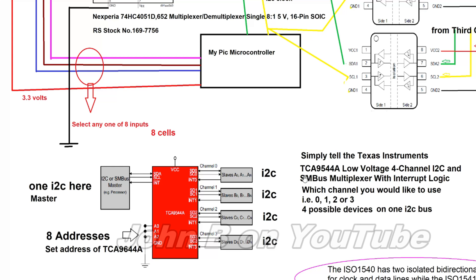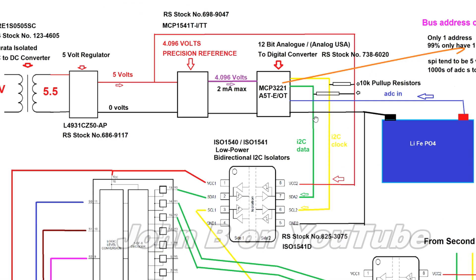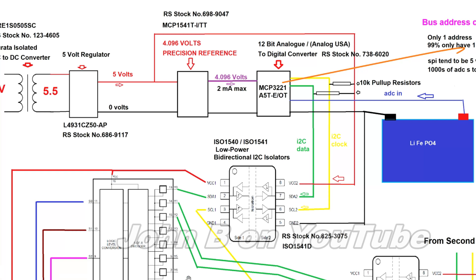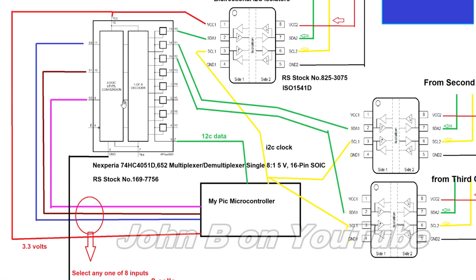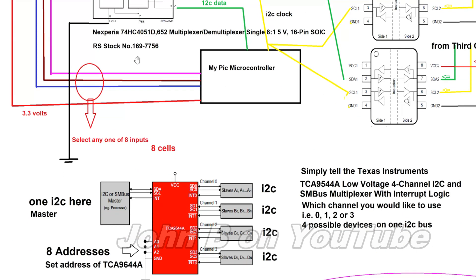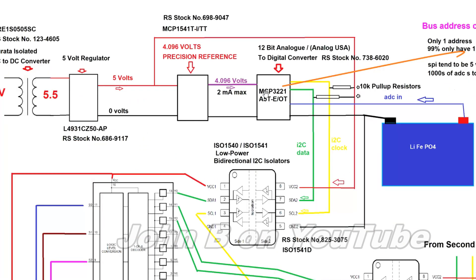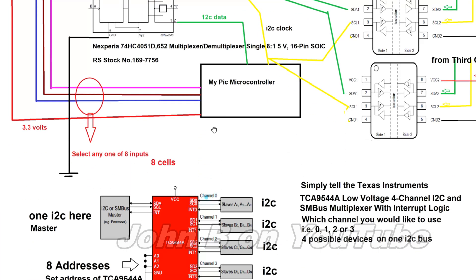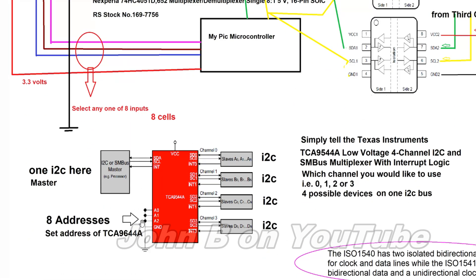It's a Texas Instruments TCA9544A—one I2C master and it has an address that you can set here. Via I2C communication you tell it internally which I2C, one of four, you want to communicate with. So this would resolve that one address conflict.